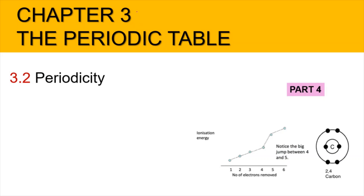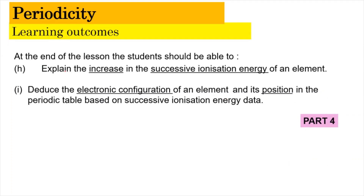Hi, Assalamualaikum and a very good morning. We are now in Chapter 3, the periodic table, focusing on subtopic 3.2 periodicity, part 4 of the video. In this video, we're going to learn how to explain the increase in successive ionization energy of an element, and how to deduce the electronic configuration and position in the periodic table based on successive ionization energy data.